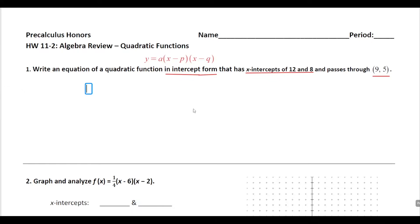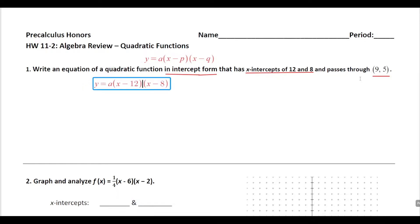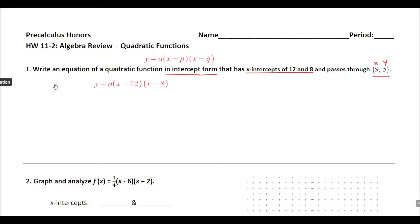So first things first, let's go ahead and fill in everything we know. We don't know the a value yet, so I'm going to leave that blank. Times x minus p and q — one is 12 and one is 8; it doesn't matter which is which. So we have x minus 12 times x minus 8. They also tell us that the function's graph passes through this point, meaning if I plug in 9 for x and 5 for y, I'll have a true statement. So I can plug this in temporarily to solve for a.